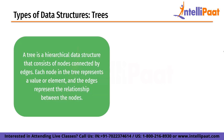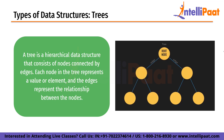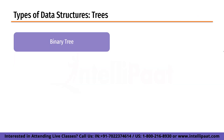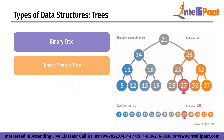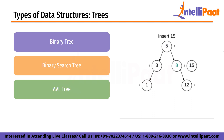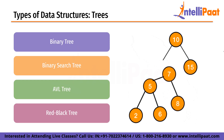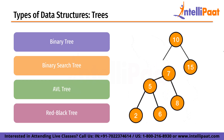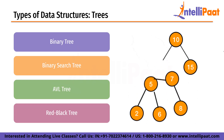A tree is a hierarchical data structure that consists of nodes connected by edges. Each node represents a value or element and the edges represent relationships between nodes. The topmost node is called the root and every other node is a descendant of the root. Nodes with the same parent are called siblings, and nodes with no children are called leaves. A binary search tree stores values where the left child is smaller than the parent and the right child is larger, allowing efficient searching and sorting. An AVL tree is a self-balancing binary search tree where the heights of left and right subtrees at any node differ by at most one.